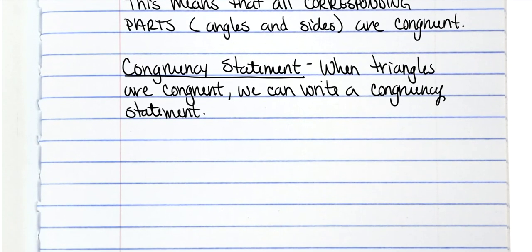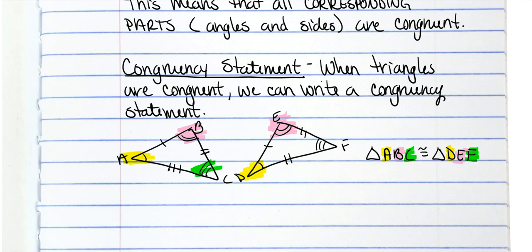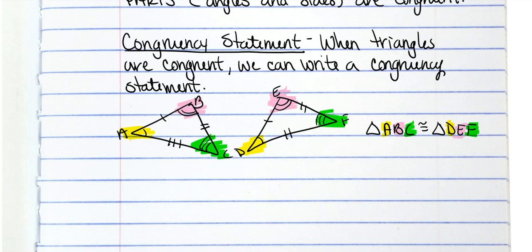That looks like this. If you have two triangles, let's say triangle ABC and triangle DEF, and you need to put these markings — 1, 2, 3 on angles A, B, C respectively. So triangle ABC is congruent to triangle DEF. The reason why A and D have to be together is because they're the ones with the one arc. B and E have to be together because they're the ones with the two arcs. A valid congruency statement must match all corresponding angles and sides, as shown with the highlighting.